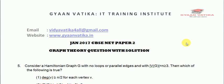This is Nupur from Gyanvatika and today we are seeing January 2017 CBSC Net Paper 2, Question No. 5 of the topic Graph Theory. The question states that: consider a Hamiltonian graph G with no loops or parallel edges and with number of vertices V(G) equals to N greater than or equals to 3. Then, which of the following is true?